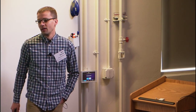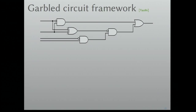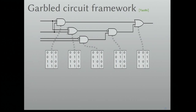I'm going to start off right away and refresh everyone's memory about garbled circuits. This is like your first lecture in some grad crypto course. Here is a Boolean circuit — this is actually some sort of comparison circuit comparing two 2-bit numbers. Each gate in the circuit is associated with a truth table.